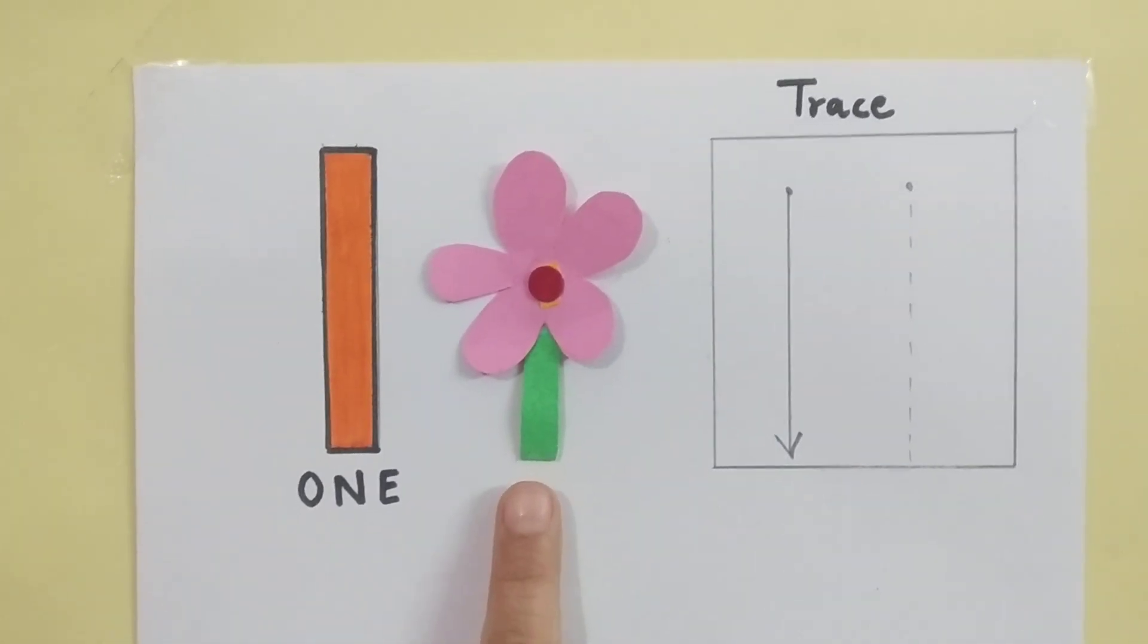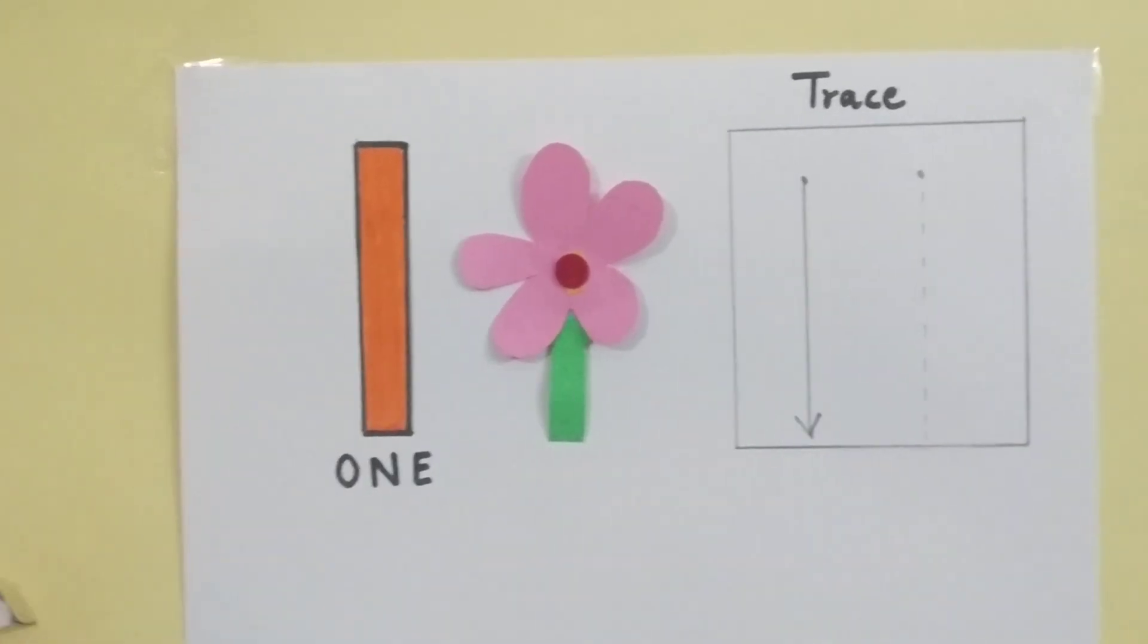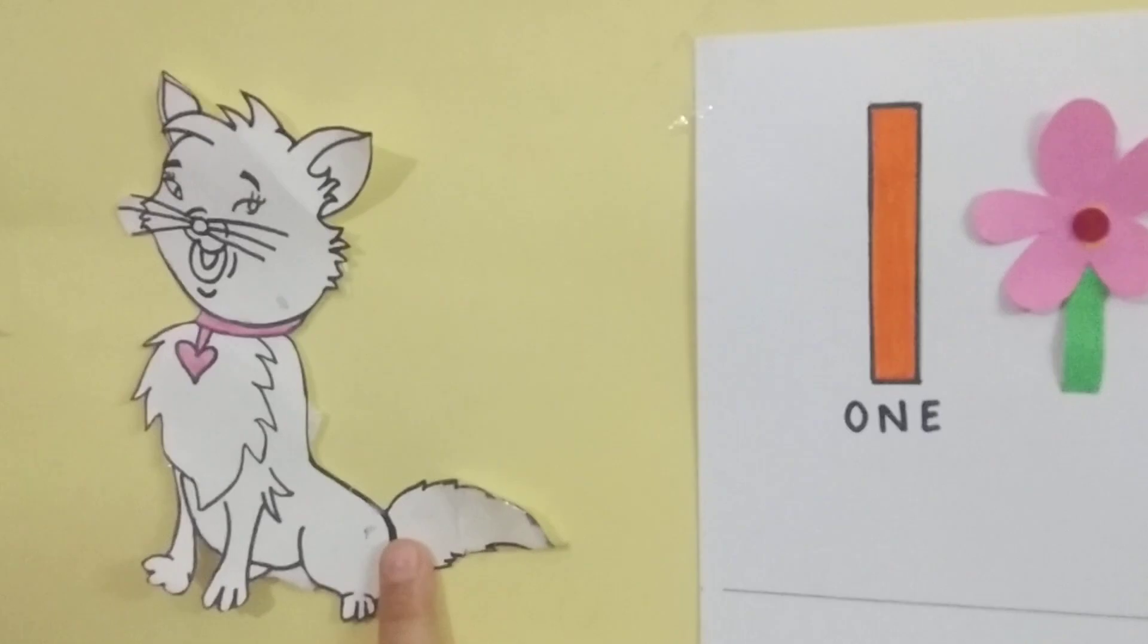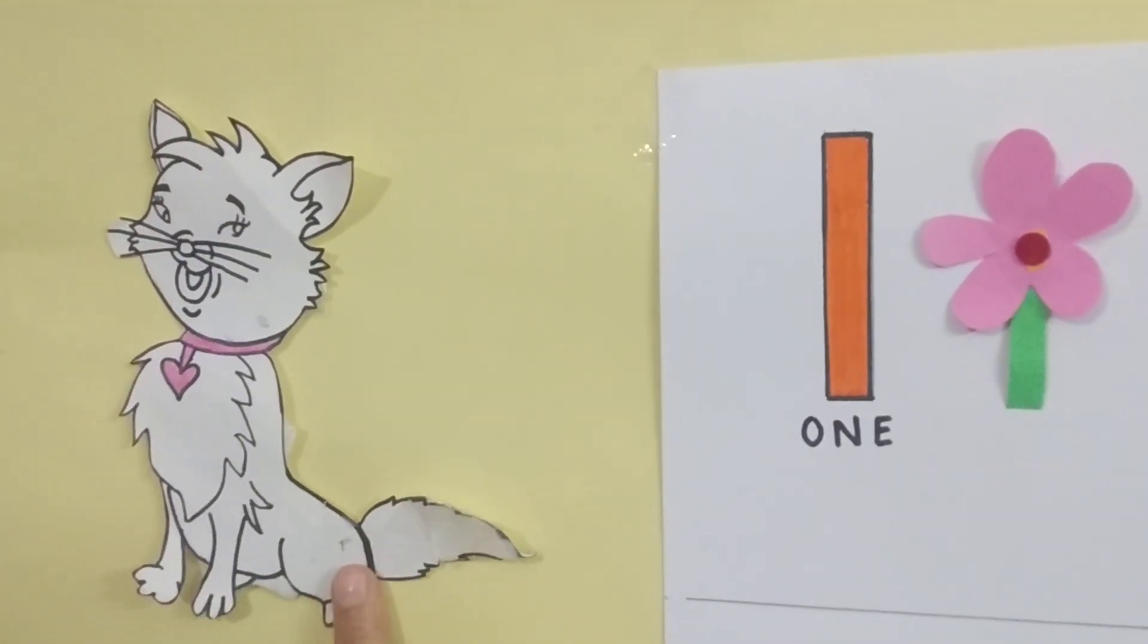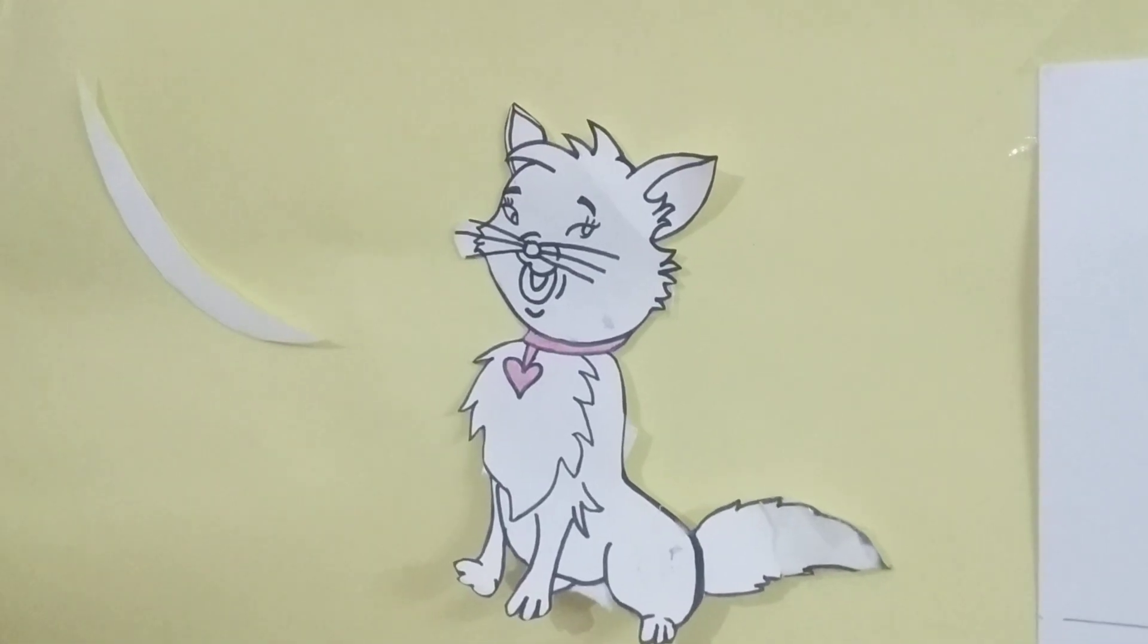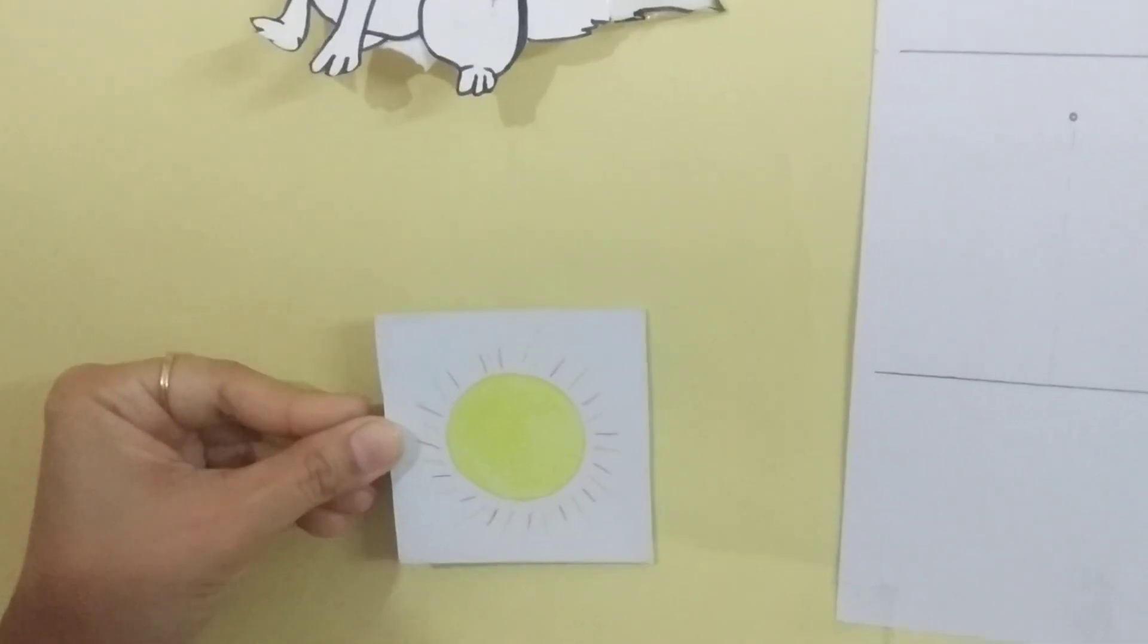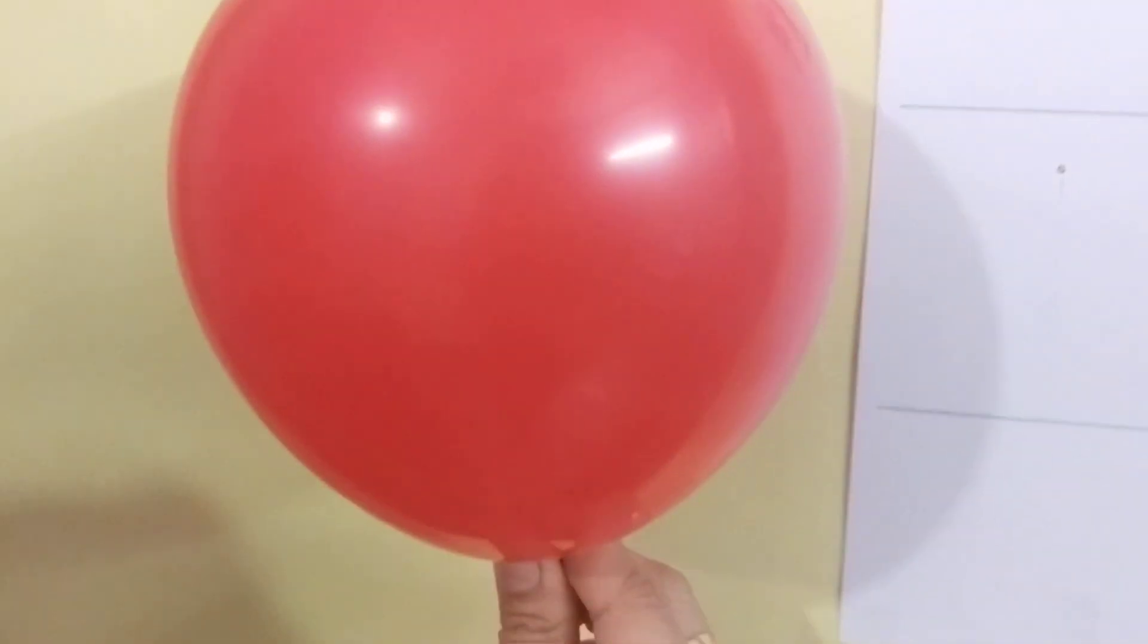Now, how many flowers are here? One flower. See, look here, what is this? One cat. One moon. One sun. One balloon.